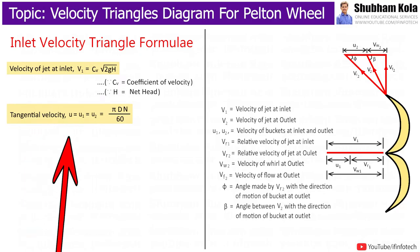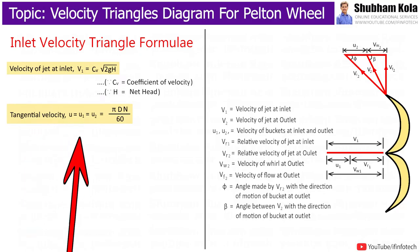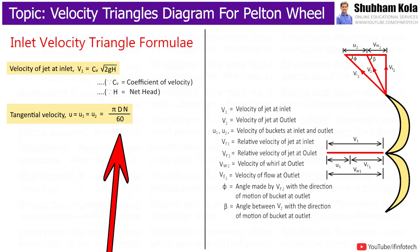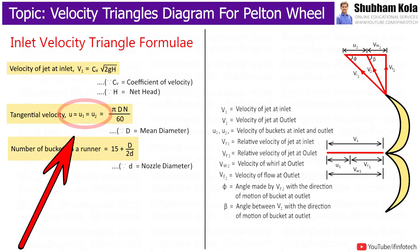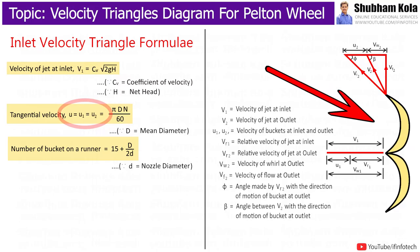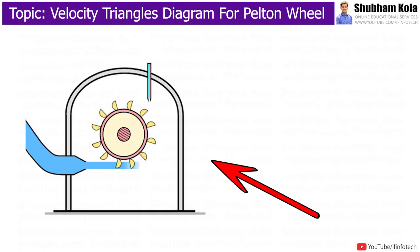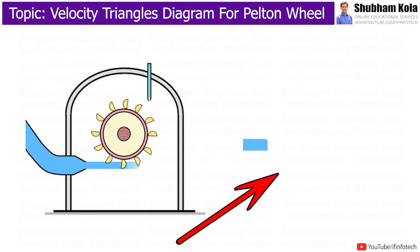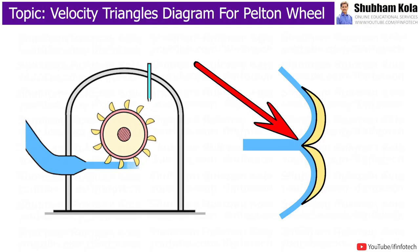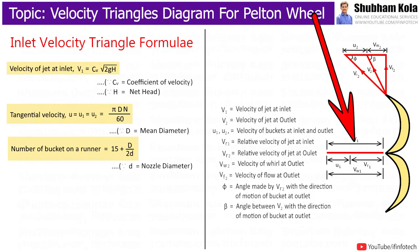The tangential velocity U is equal to U1, which is also equal to U2, and is given by U = πdN/60. This means the buckets always move with the same velocity, hence U = U1 = U2. In the Pelton Wheel Turbine, water strikes exactly at the center of each bucket, so the velocity triangle at inlet is a straight line, meaning the vane angle and guide blade angle at inlet are both zero.